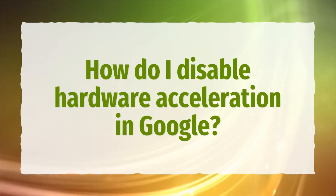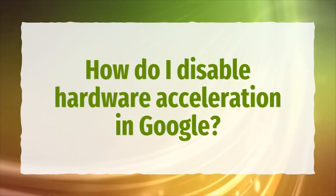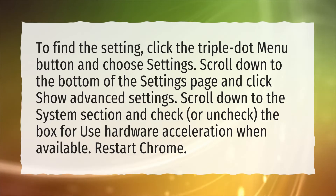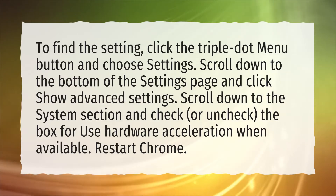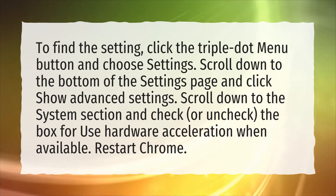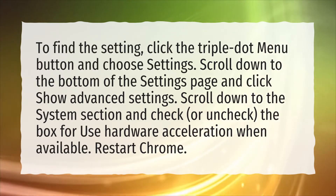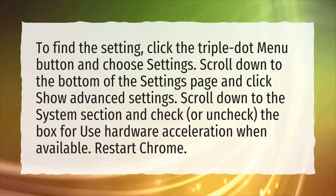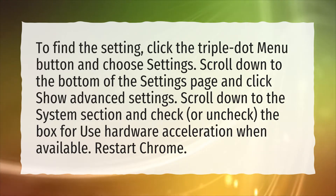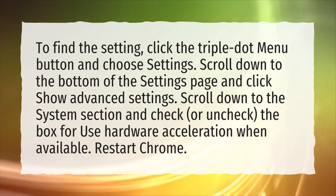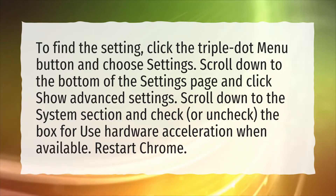How do I disable hardware acceleration in Google? To find the setting, click the triple dot menu button and choose Settings. Scroll down to the bottom of the Settings page and click Show Advanced Settings. Scroll down to the System section and check, or uncheck, the box for 'Use hardware acceleration when available.' Restart Chrome.